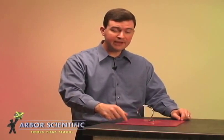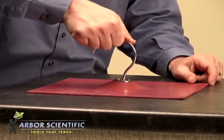Create a discrepant event. Place the mat on a smooth surface and ask for a student volunteer. The students may exert a lot of force on the hook, but they won't be able to lift the mat off the table.